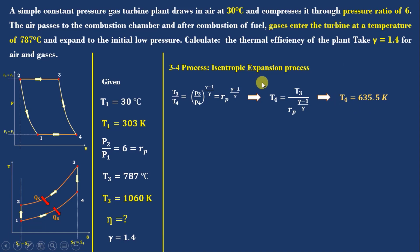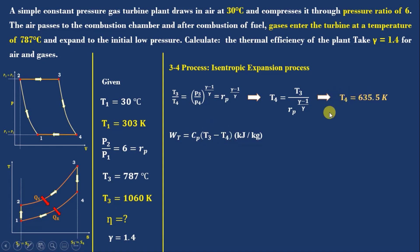From T4 we find the work produced by the turbine: Wt = Cp(T3 − T4). T3 is given and T4 was found. The turbine work is Wt = 426.62 kJ/kg of air.